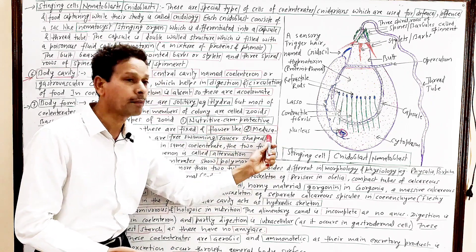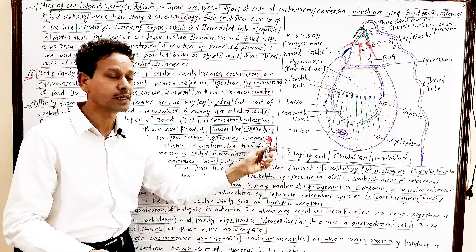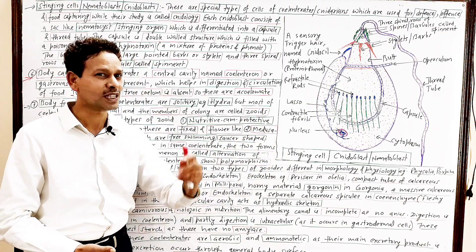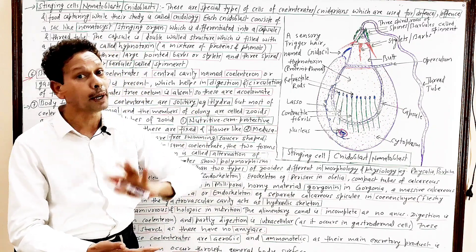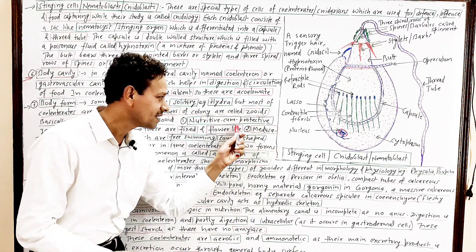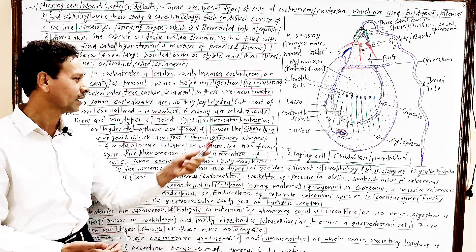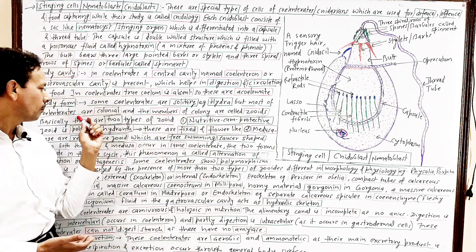While the second member, second form, second zooid is medusa, which is free swimming. It is saucer-shaped or it is umbrella-shaped. It is a sexual zooid. And this polyp or hydranth, it is asexual zooid.